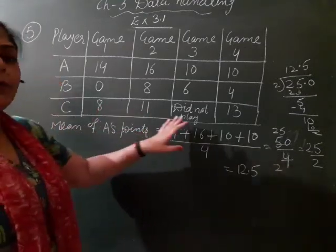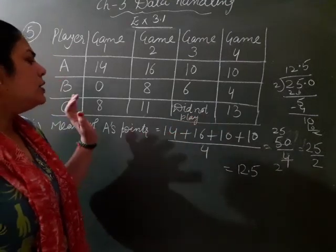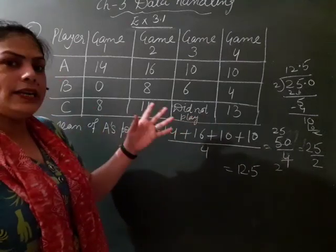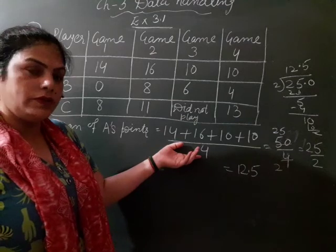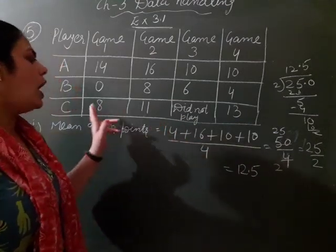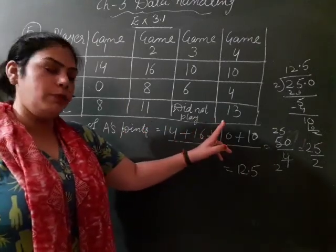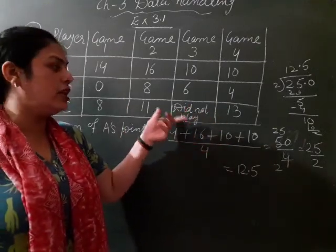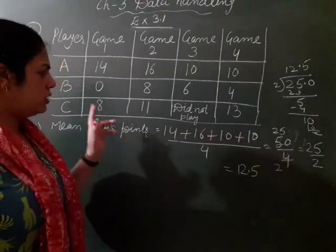Ki agar aapko C ki mean points nikaal hain. So aap C ko kis se divide karen ge? Iska means total observation jo hai, sum of observation ko. Jaise number of observation 4 lete hai. To yahaan pe bhi hum C ki jab number of observation lene hai, woh kya lenge? 3 lenge ya 4 lenge? We taking 3.